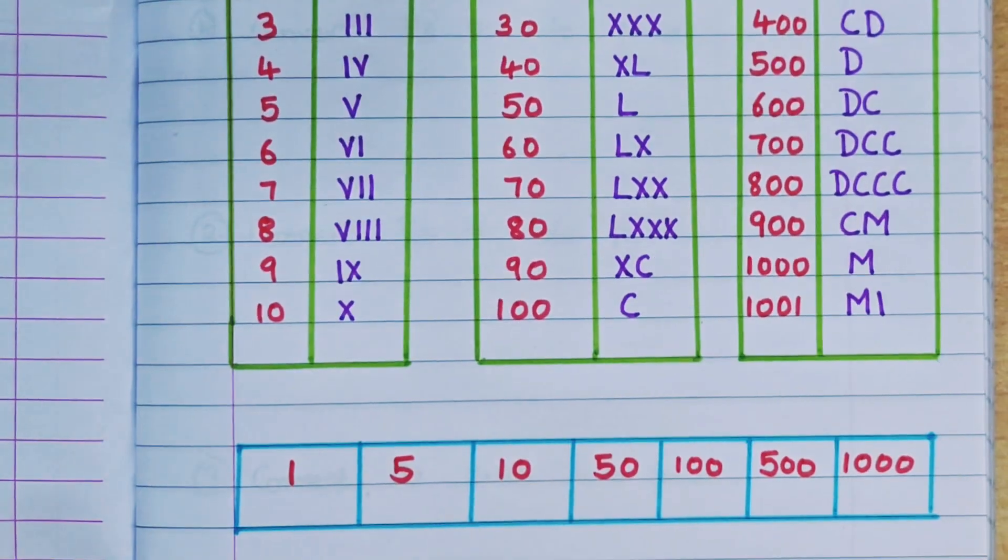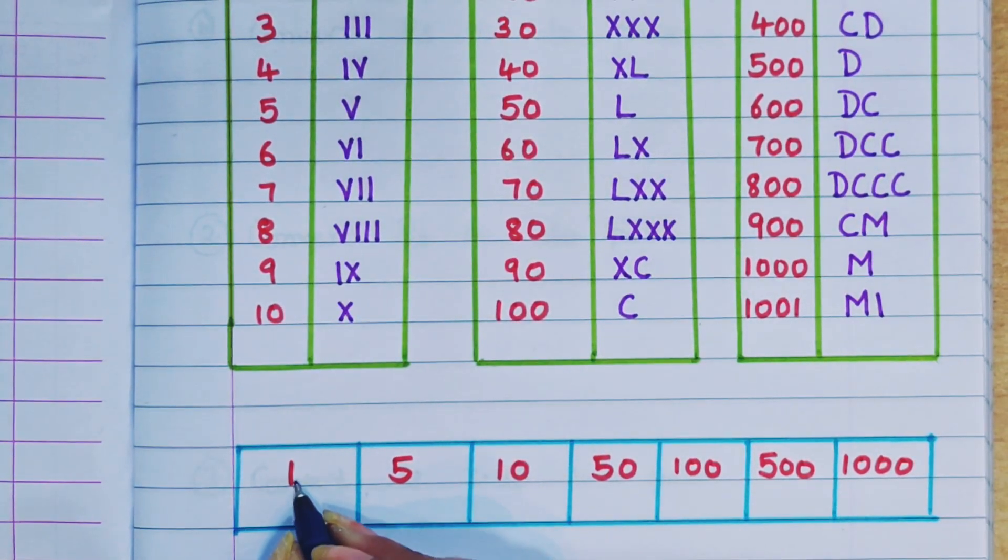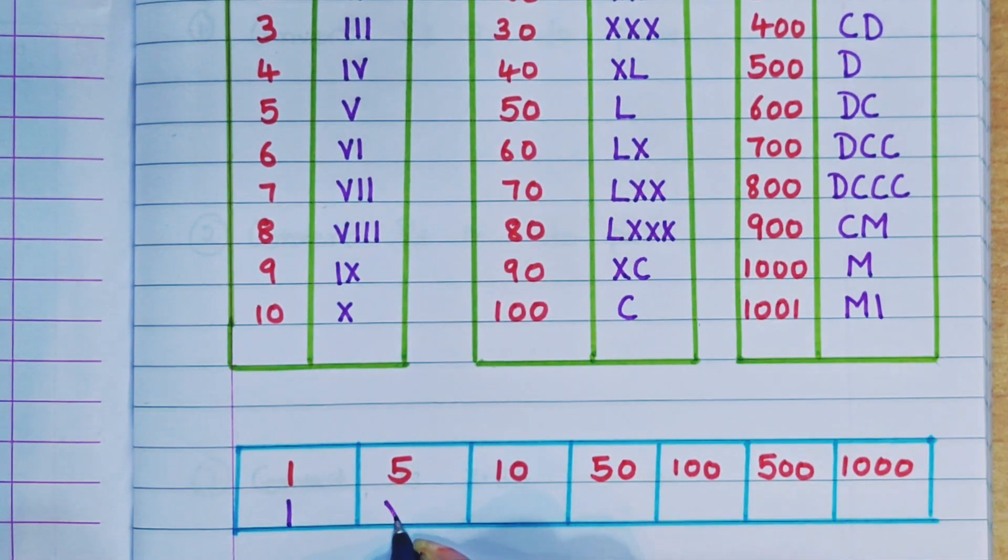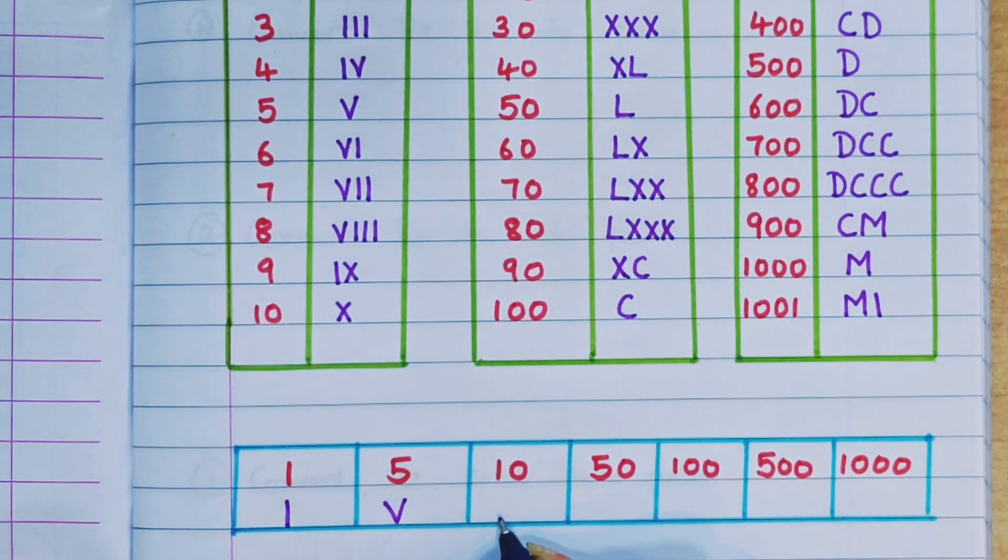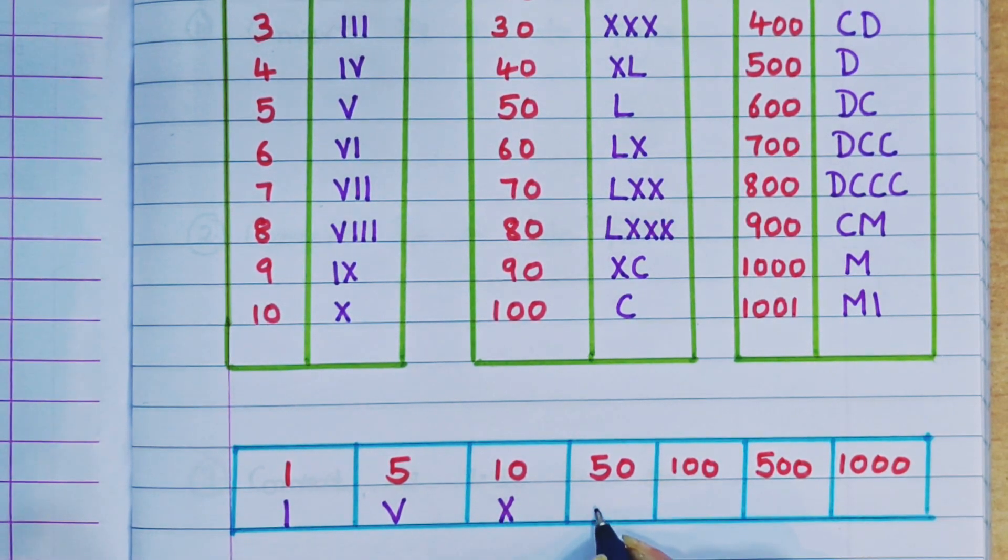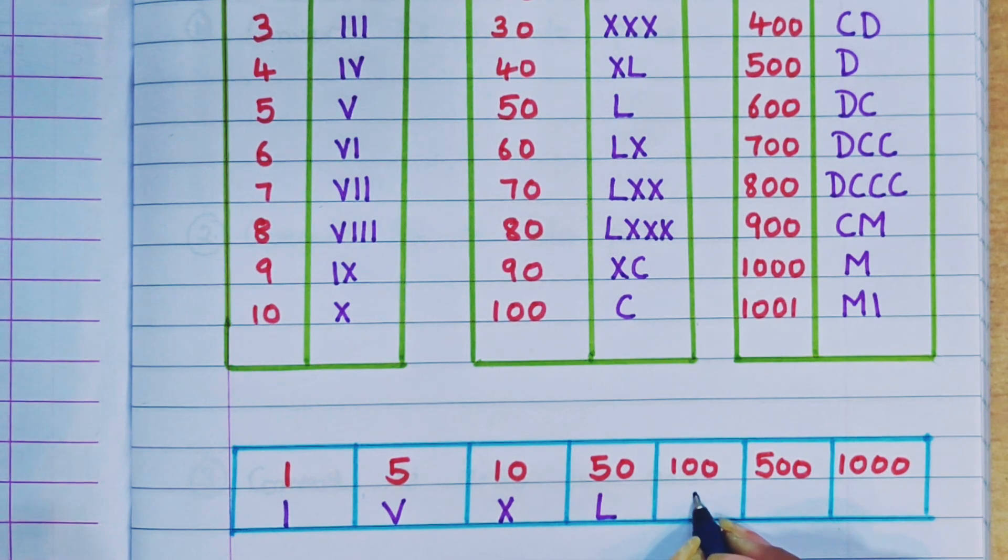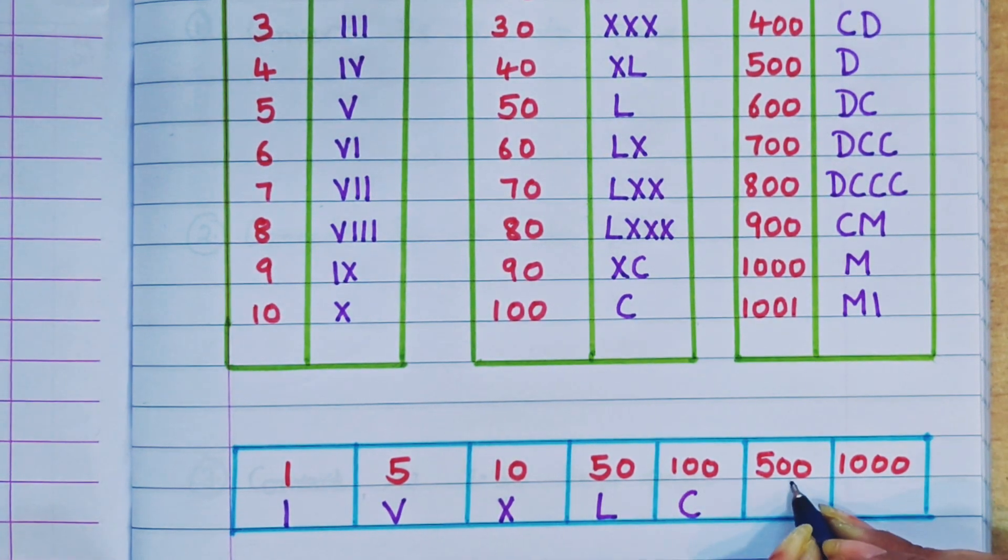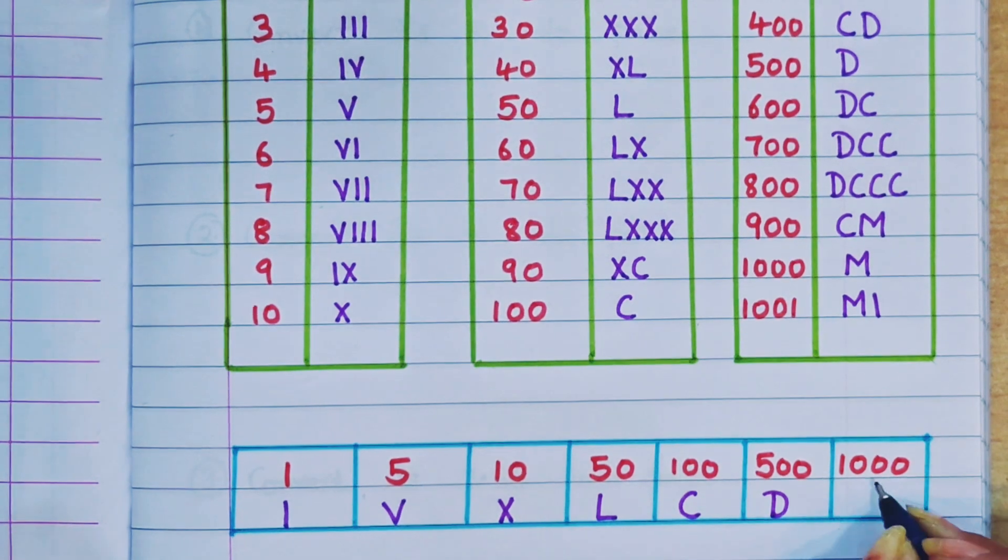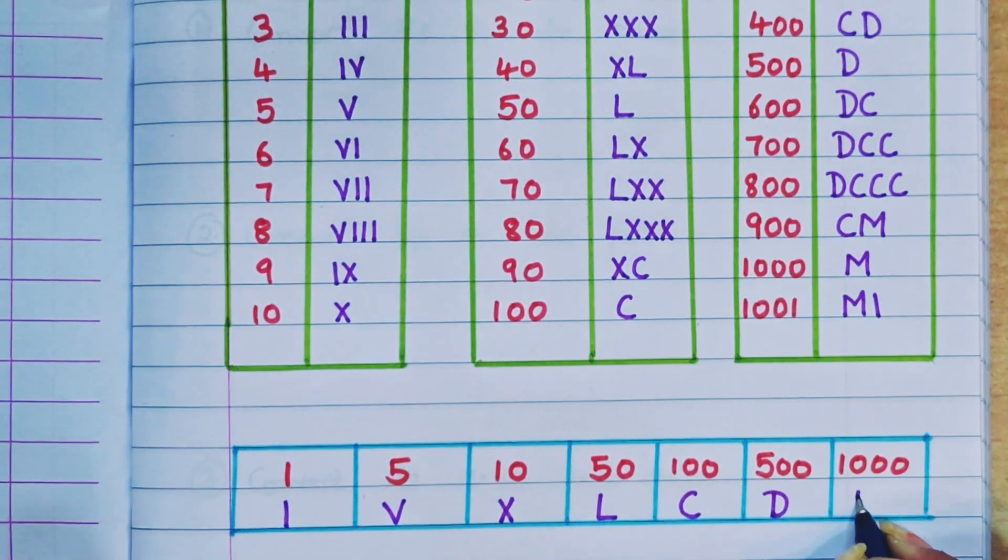So let's revise the basic numerals. 1 is represented as I, 5 is represented as V, 10 is represented as X, 50 is represented as L, 100 is represented as C, 500 is represented as D and 1000 is represented as M.